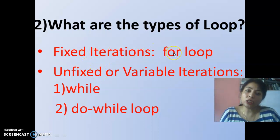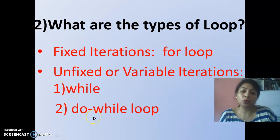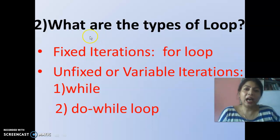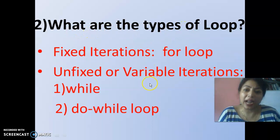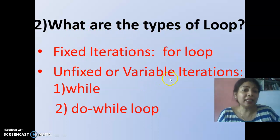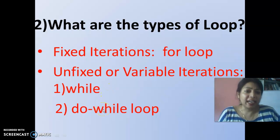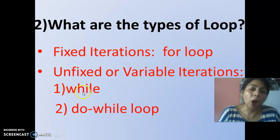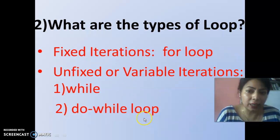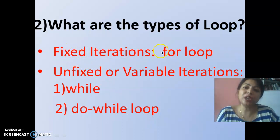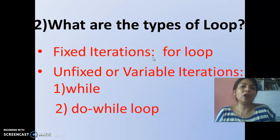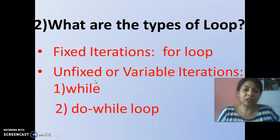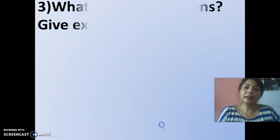In some books you will see two types of loops given as entry control loop and exit control loop. In that case, both for and while are entry control loops, and do-while is an exit control loop. But I suggest you write: two types of loops — fixed iteration and unfixed iteration. Example of fixed iteration is for loop, and example of unfixed iteration is while and do-while loop.